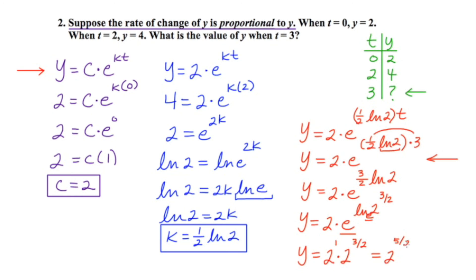I can think of that five halves as 2.5. And I'm going to reach for my calculator now. I think I've simplified just about as much as I can. And when I do that, I get this answer of about 5.656.